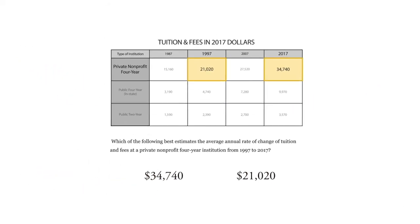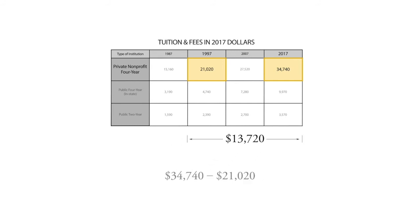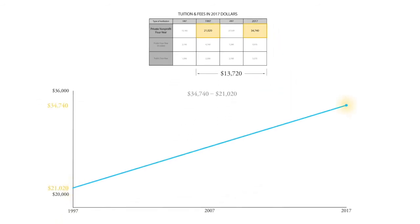So we'll take $34,740 and subtract $21,020, and we get a difference of $13,720. You should always keep track of what these numbers mean — I find that losing track of what numbers represent is the single most common trait among people who struggle in math. That $13,720 means the cost of a private university over those 20 years, between 1997 and 2017, has on average gone up by $13,720 total.